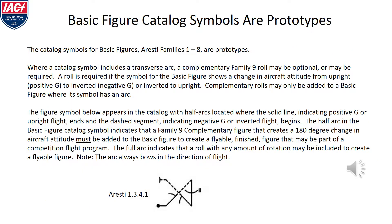In the Aresti catalog, the symbols for basic figures in families 1 through 8 are actually prototypes used to compose more complex figures. Where a catalog symbol includes a transverse arc, a family 9 roll may be optional or required. A roll is required if the location of the arc is where the aircraft attitude changes from upright to inverted or inverted to upright. Complementary rolls may only be added to a basic figure where an arc appears. The figure example here shows two half arcs and one full arc. Where the half arcs appear, a roll that results in a change of attitude must be inserted. Where the full arc appears, a roll is optional, and if one is added, any flyable roll may be added in that location.